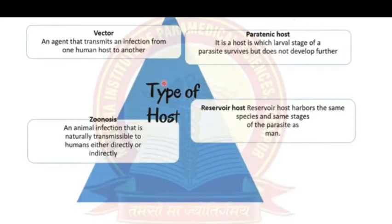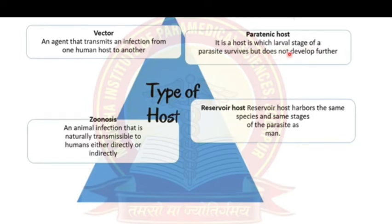A vector host — like the Anopheles mosquito for malaria or the Culex mosquito — transports the parasite Plasmodium from one person to another, causing malaria infection. A paratenic host is one where the larval stage of the parasite can survive but cannot develop further from larval to adult stage.